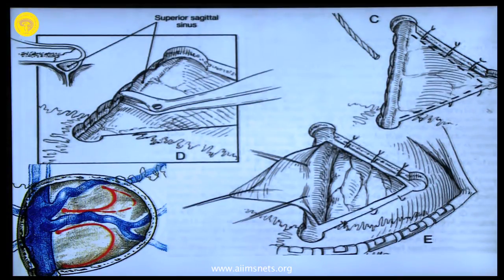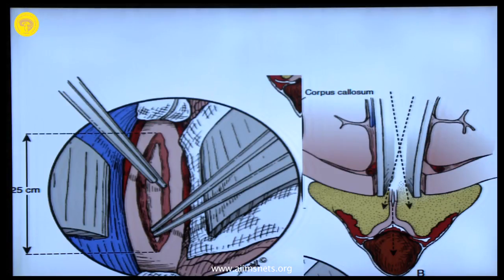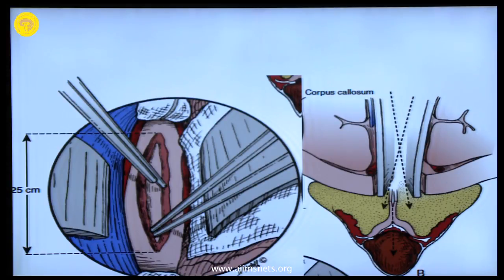If you have patience, once the CSF starts coming out, you will get enough space. I think the corpus callosum is God-made only for neurosurgeons to split — we keep on splitting the corpus callosum in so many procedures.